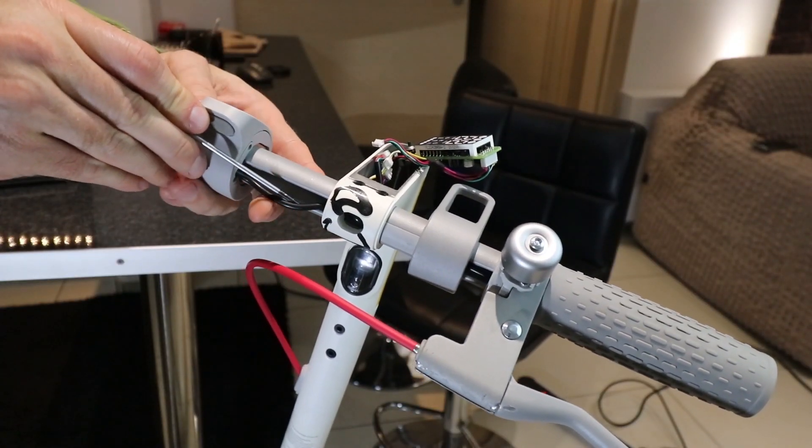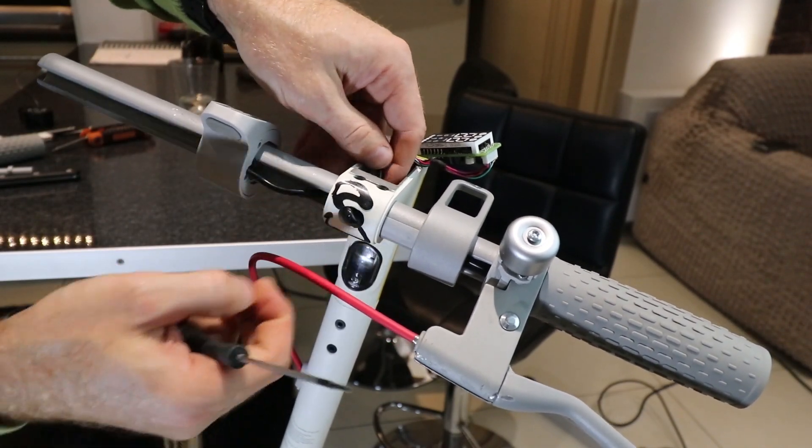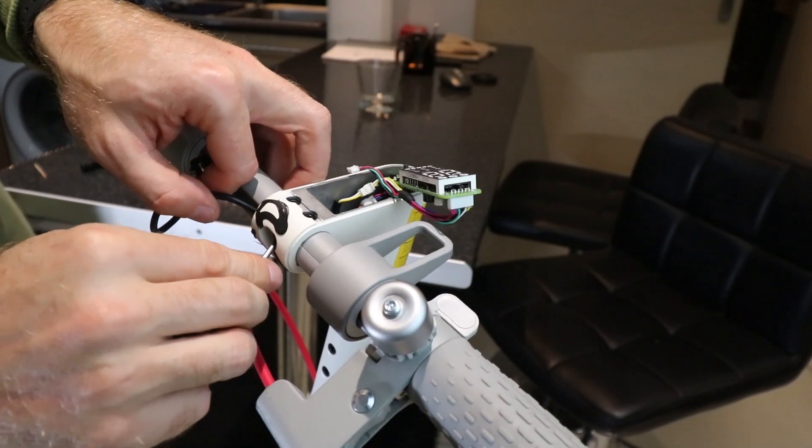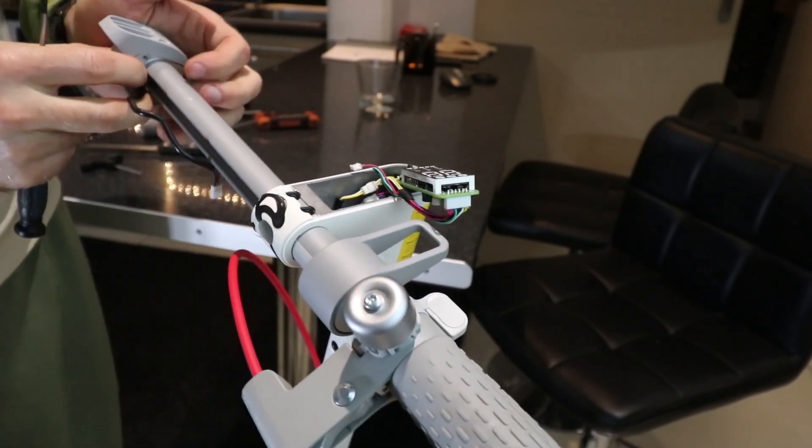The throttle wire has to be released and pulled out. Unscrew the throttle and remove it from the handle.